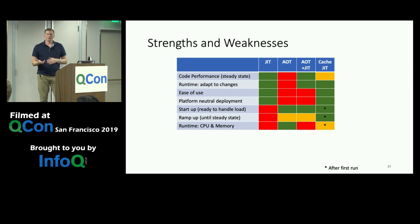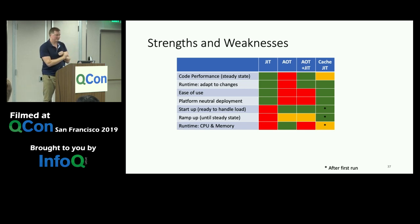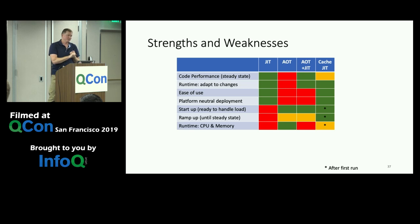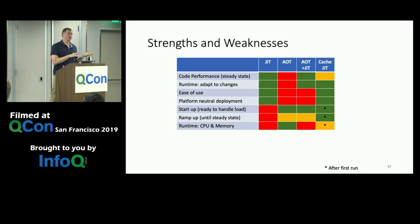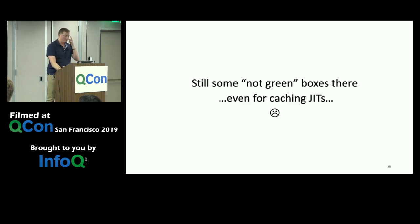Adding caching JIT to the scorecard: near-great steady-state performance, adapts to runtime changes, very easy to use, platform neutral, great startup and ramp-up — except for the poor first run. In the second run, we get pretty good CPU and memory usage because we're not doing as many JIT compiles, but that first run still gets hit.